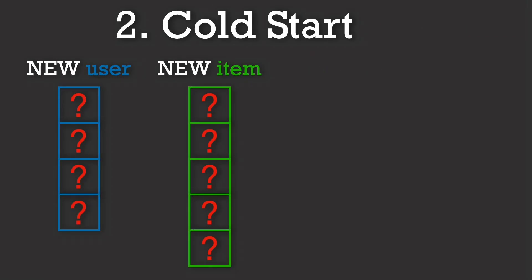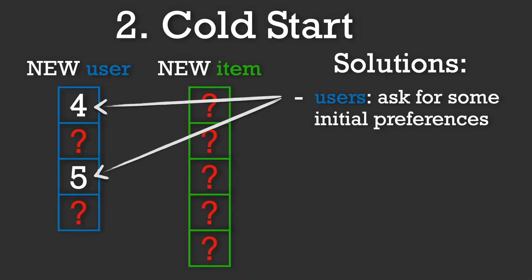Now, the cold-start problem, which implies that we don't have much information about new users or items that are added in our system. For new users, we often ask for some initial preferences when they sign up, maybe their favorite genres or a few books they have enjoyed. This helps kick-start their profile.